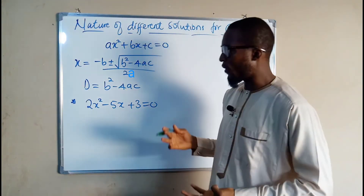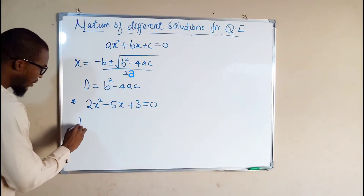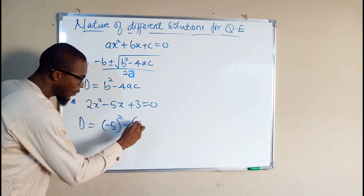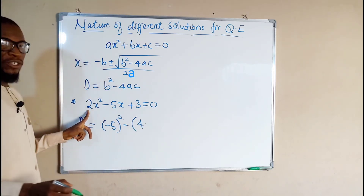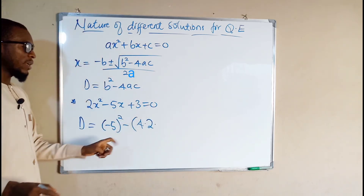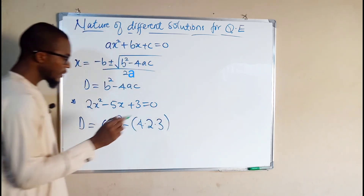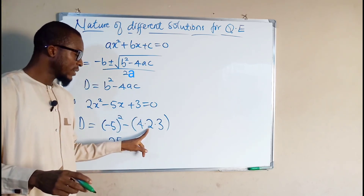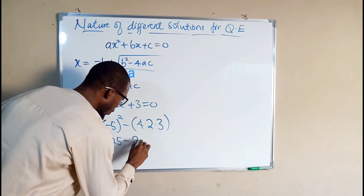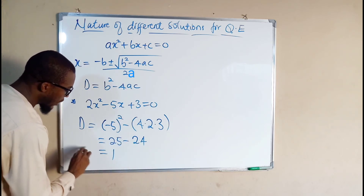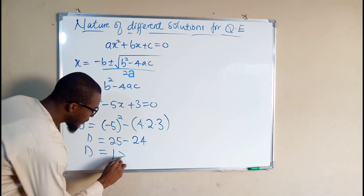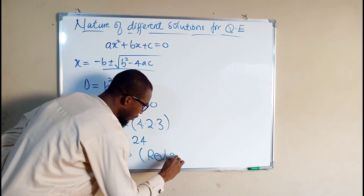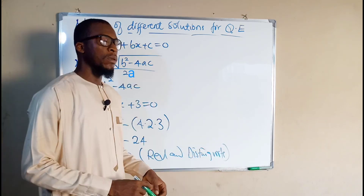Here is another quadratic equation for which we want to identify the form of solution it has. Again, d equals b squared, and b is negative 5. So we have negative 5 squared minus 4 multiplied by a, and a is the leading coefficient, which is 2, multiplied by c, the constant, which is 3. Negative 5 squared is 25, minus 4 times 2 is 8, and 8 times 3 is 24. So we have 25 minus 24, which equals 1. And 1 is greater than 0. Hence, we say this quadratic equation has real and distinct roots.